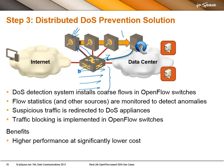You need a controller — usually supplied by the denial of service scrubbing vendor — that monitors the flow entries, detects anomalies, and tells the OpenFlow controller to send the suspect traffic over in more detail, installing traditional traffic redirection so the scrubbing appliance starts receiving the potentially malicious traffic. The reason to do this is simple: you don't have to buy appliances capable of inspecting your entire internet bandwidth. You can buy simpler, cheaper appliances and use them only as needed.